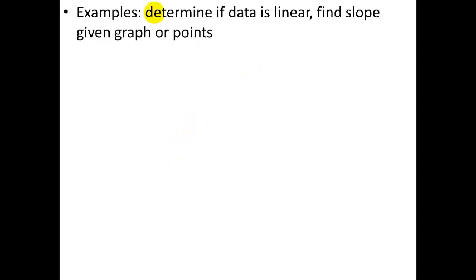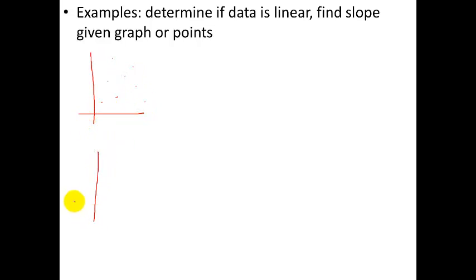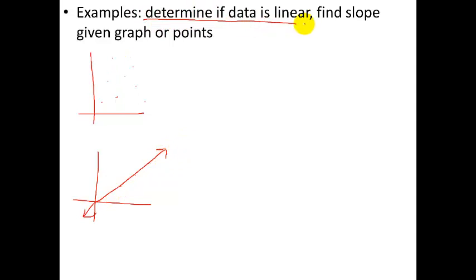Let's do a couple of examples. First, determine if data is linear. If your data looks scattered, it's clearly not linear. If it looks like it forms a straight line, it's clearly linear. By just looking at a picture, you can tell — basically, can you draw a straight line through all the data points? If so, it's linear; if not, it is not.